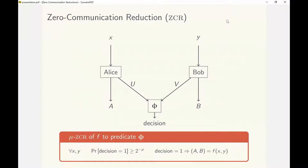The candidate output of Alice is A and her input to the predicate is U. Similarly, for Bob, the candidate output is B and the input to the predicate is V. We require that the predicate accepts with a minimum probability for all inputs. This is the non-triviality condition.